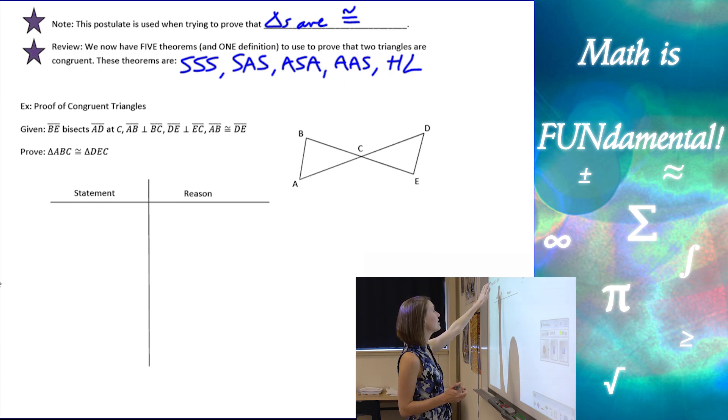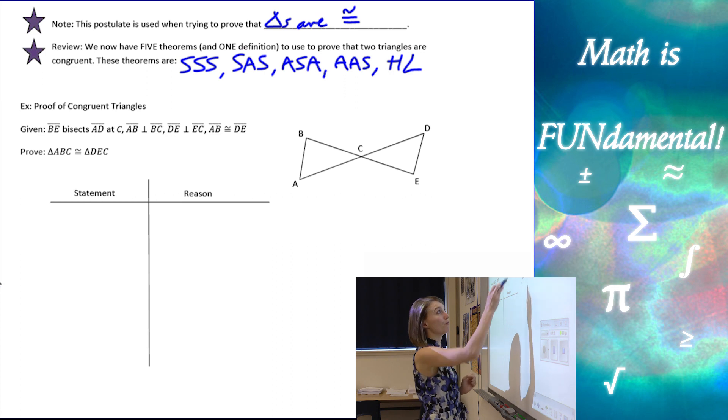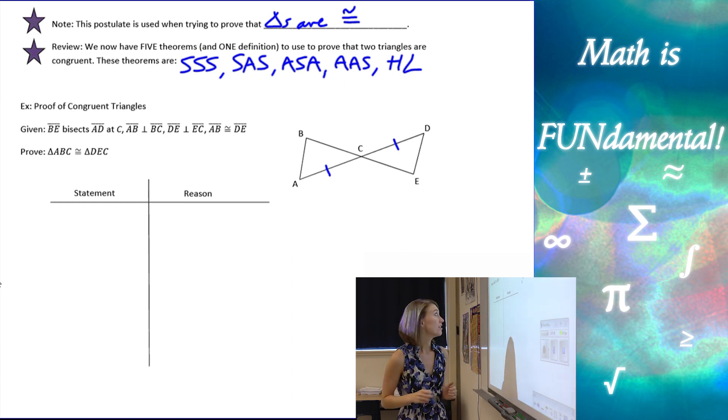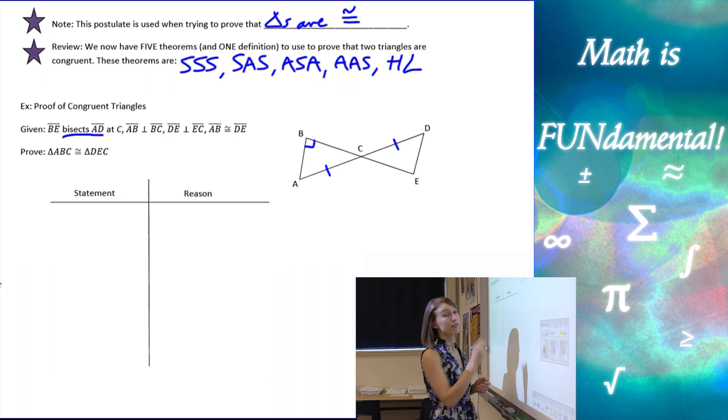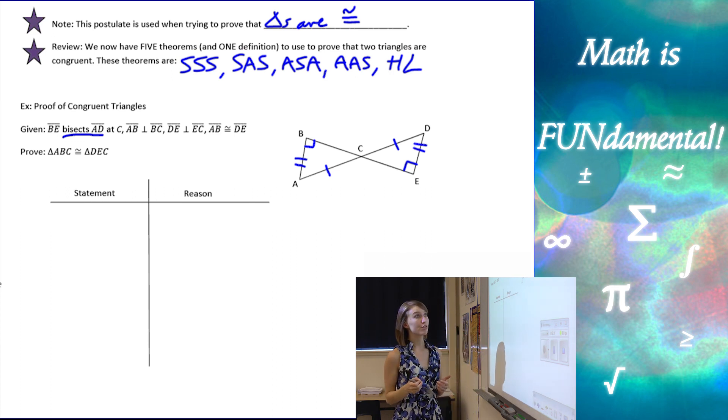We are given a bunch of information, so we're definitely going to want to put these all on our diagram. We have that BE bisects AD at C. So if BE bisects AD at C, we know that this one is congruent to that one. Notice it says that it bisects AD, not that they bisect each other. So only one of them is bisected. Be really careful about how you read that. We also know that AB is perpendicular to BC, so we can mark that with a little right angle, and DE is perpendicular to EC. And then we know that AB is congruent to DE.